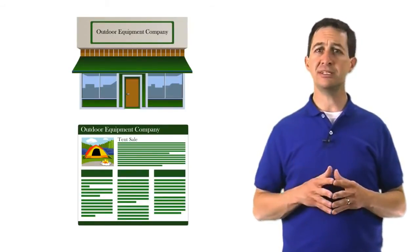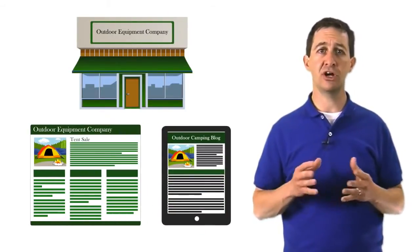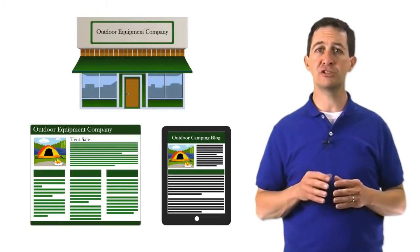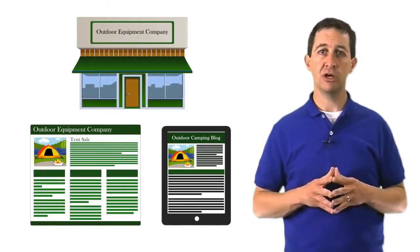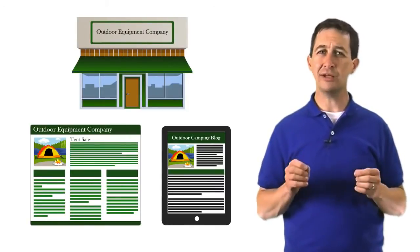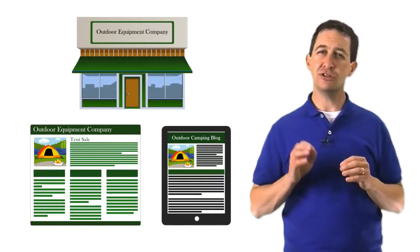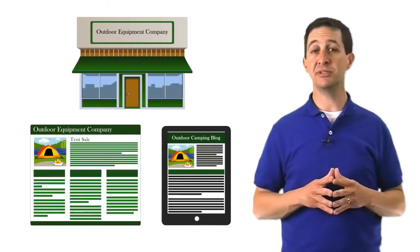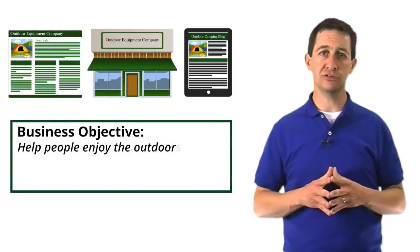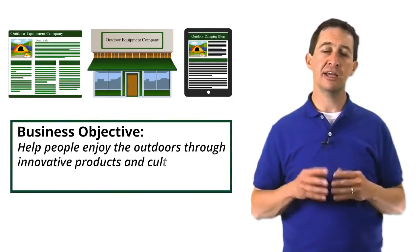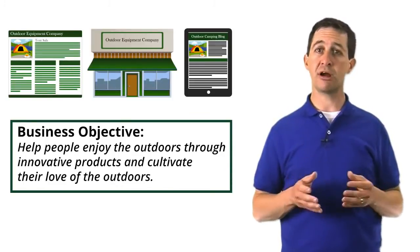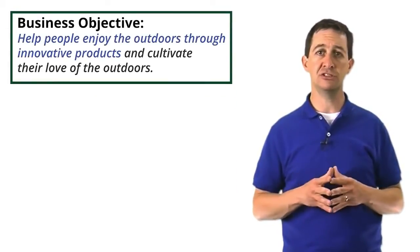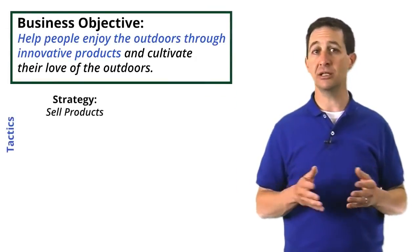This outdoor company also maintains a blog to engage customers in conversations about how to enjoy the outdoors. The first step to create our measurement plan is to define our business objective. We need to ask ourselves, why do we exist? Often, you need to dig really deep to get the true answer. In our example, let's say the business objective is to help people enjoy the outdoors through innovative products and cultivate their love of the outdoors. To support our objective, our business will use specific strategies and tactics. One strategy to support our mission would be to sell outdoor products.